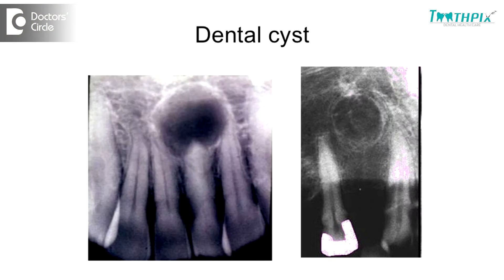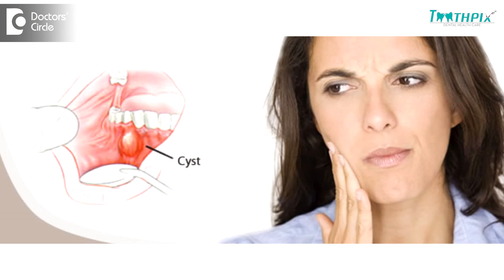A cyst is basically a lining — an epithelial lining inside the bone when we are talking about dental cysts inside the oral cavity. It is lined by an epithelium and has got a fluid, semi-fluid, or similar content inside the lining. What happens is that it's either attached to the bone, resulting in bone loss around the cyst area.